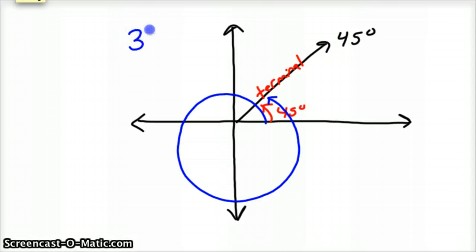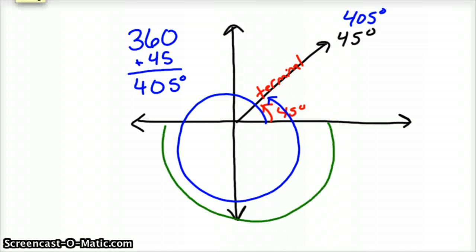So that would be a coterminal ray would be 360 plus 45. And this would be the positive coterminal. So that would be 405 degrees. So 45 degrees and 405 degrees are called coterminal. Okay, you could also have the negative coterminal angle. So if we start here and go backwards, that's a negative angle. And we end here at the terminal ray.